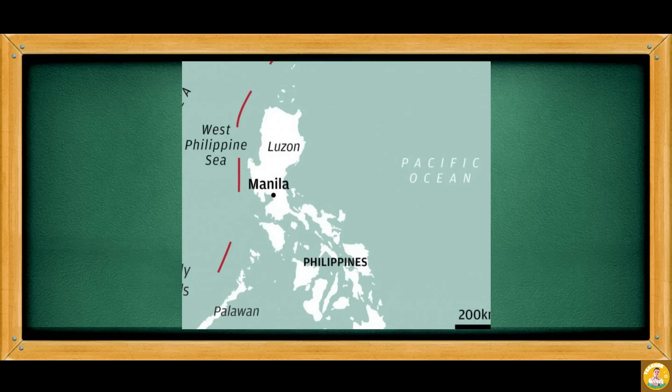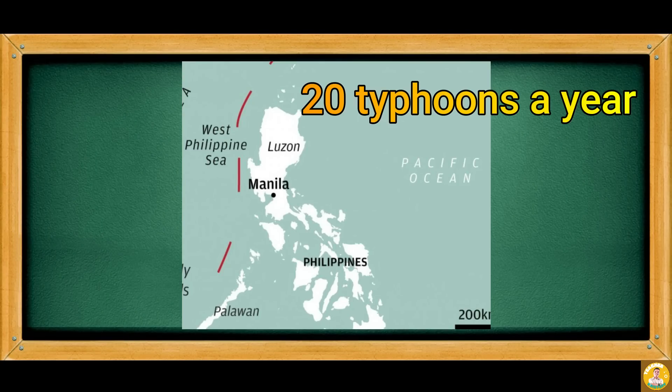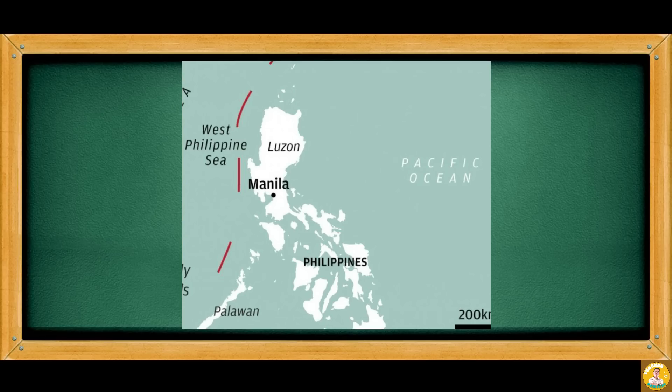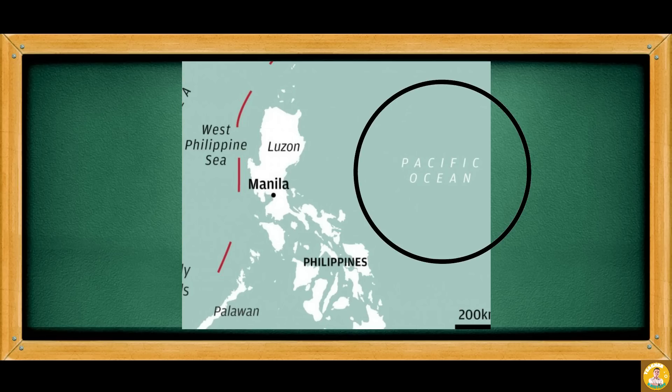The Philippines experiences an average of 20 typhoons a year. The biggest contributor of weather disturbances in our country is the Pacific Ocean, which lies on the eastern part of the country.